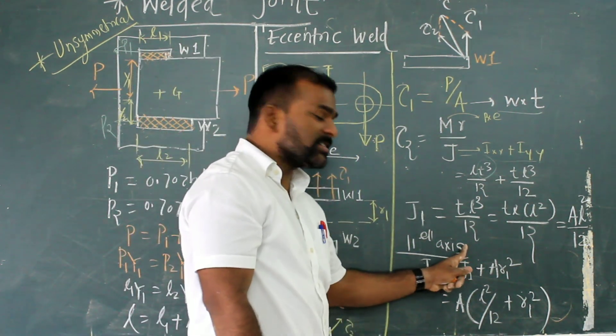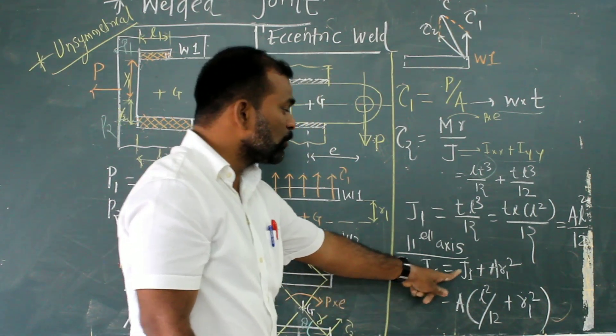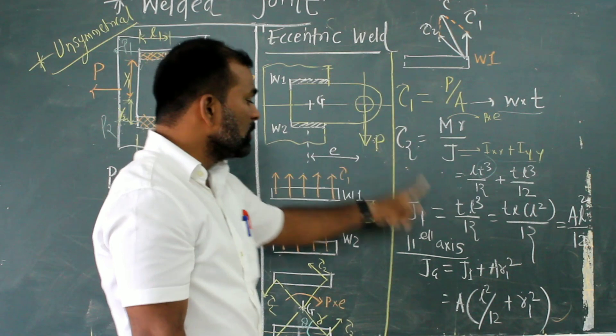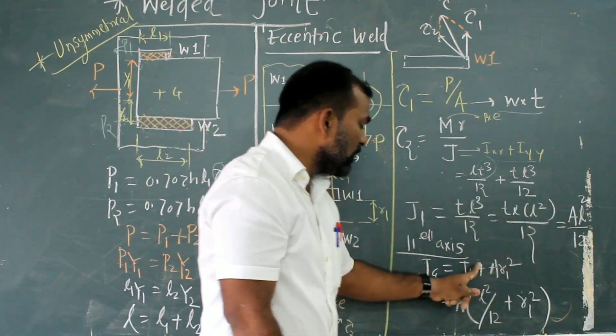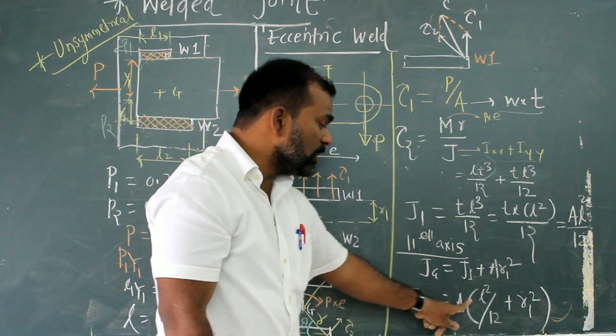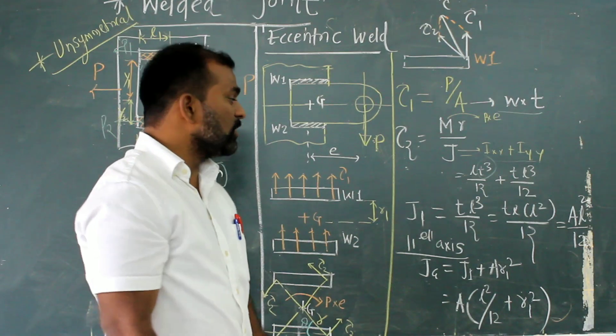According to parallel axis theorem, why parallel? Because two welds are parallel to each other. According to parallel axis theorem, it suggests that total polar moment of inertia with respect to CG is equal to polar moment of inertia for first weld plus A R1 squared. This value, A L squared divided by 12, if I put here, I will get A into L squared divided by 12 plus A R1 squared.